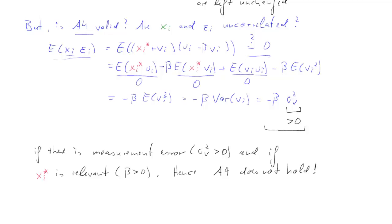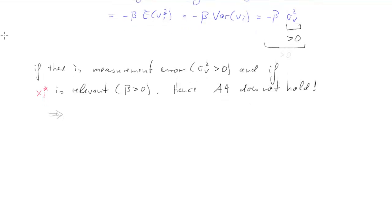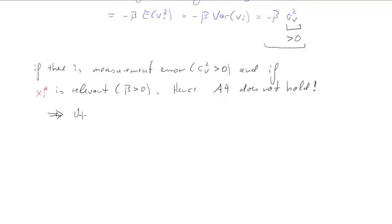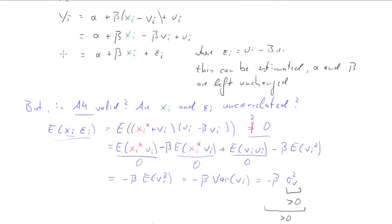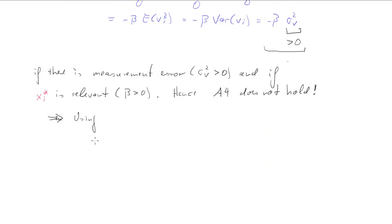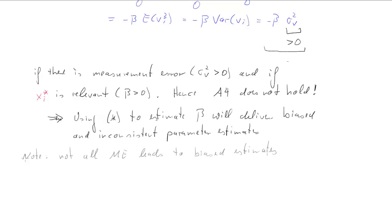Therefore if that's the case, A4 does not hold because then the expected value of xi times epsilon i is unequal to zero. So if we use this model, the one which we can estimate, we need to recognize that the estimate for beta will be biased and inconsistent. And that's of course a problem.